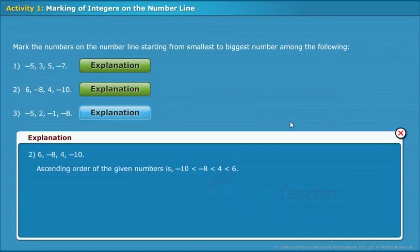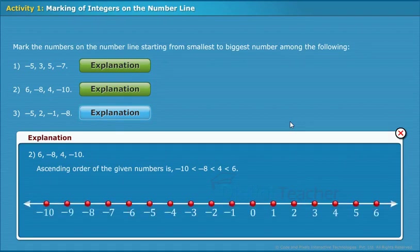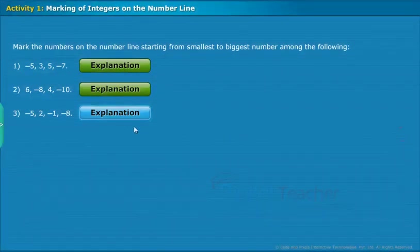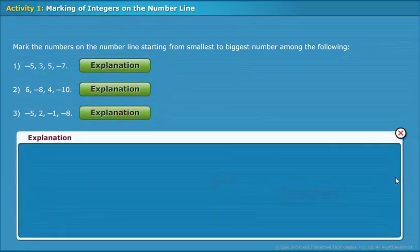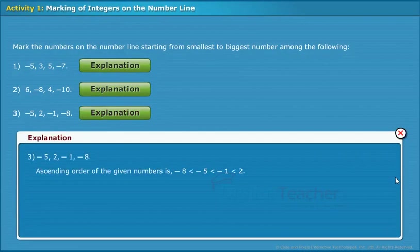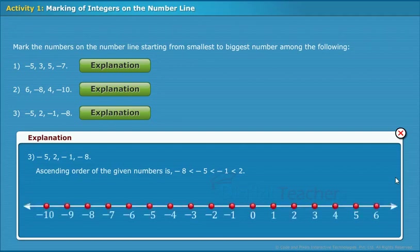Ascending order of the given numbers is: minus 10, minus 8, 4, and 6. The ascending order representation is: minus 10, minus 8, 4, and 6. Ascending order of the given numbers is: minus 8 less than minus 5 less than minus 1 less than 2. The ascending order representation is: minus 8, minus 5, minus 1, and 2.